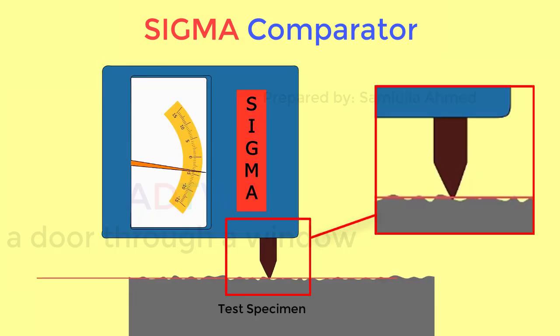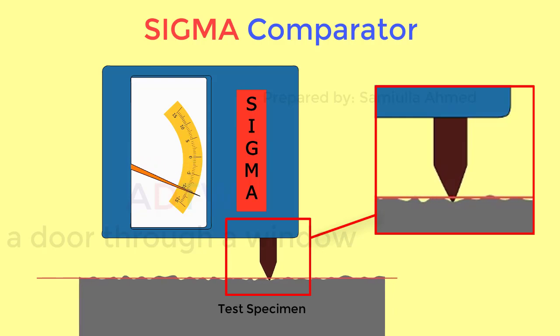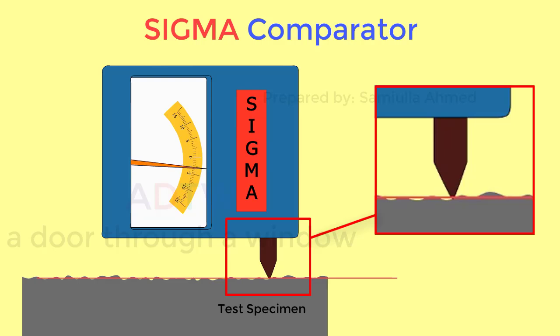Then the test specimen is placed on the measuring table and made to slide below the plunger of the instrument. Any difference in the measured dimension of the specimen will result in either the lowering or rising of the plunger.